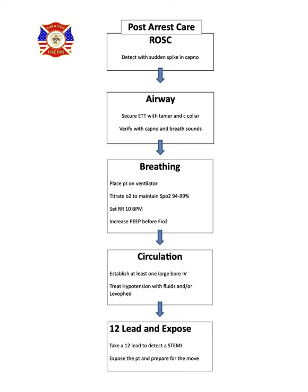Starting with ROSC on the flowchart — in the box it says 'detect with a sudden spike in capnography.' This is not new for us; we've been using capnography in cardiac arrest for a long time. Typically during an arrest we have a capnography level around 20-25, and then suddenly we see a jump to 35, 40, 50, 60 or even higher. That tells us we most likely have ROSC, and it's time to check a pulse and analyze the rhythm.